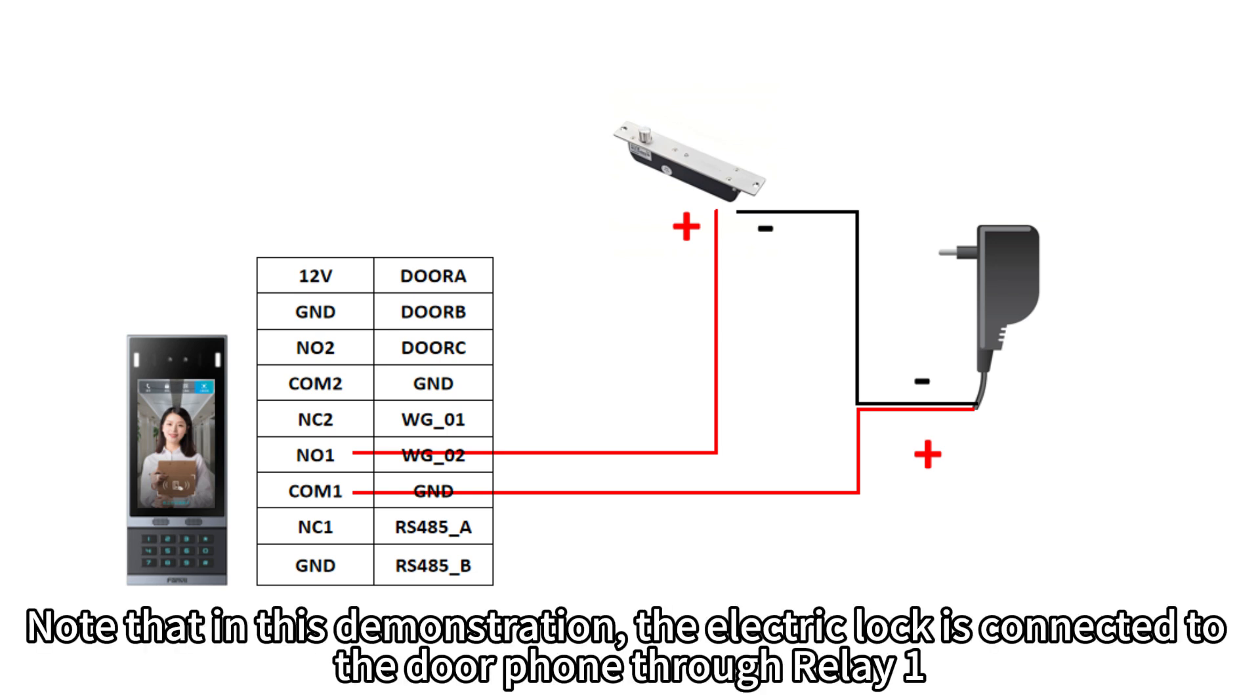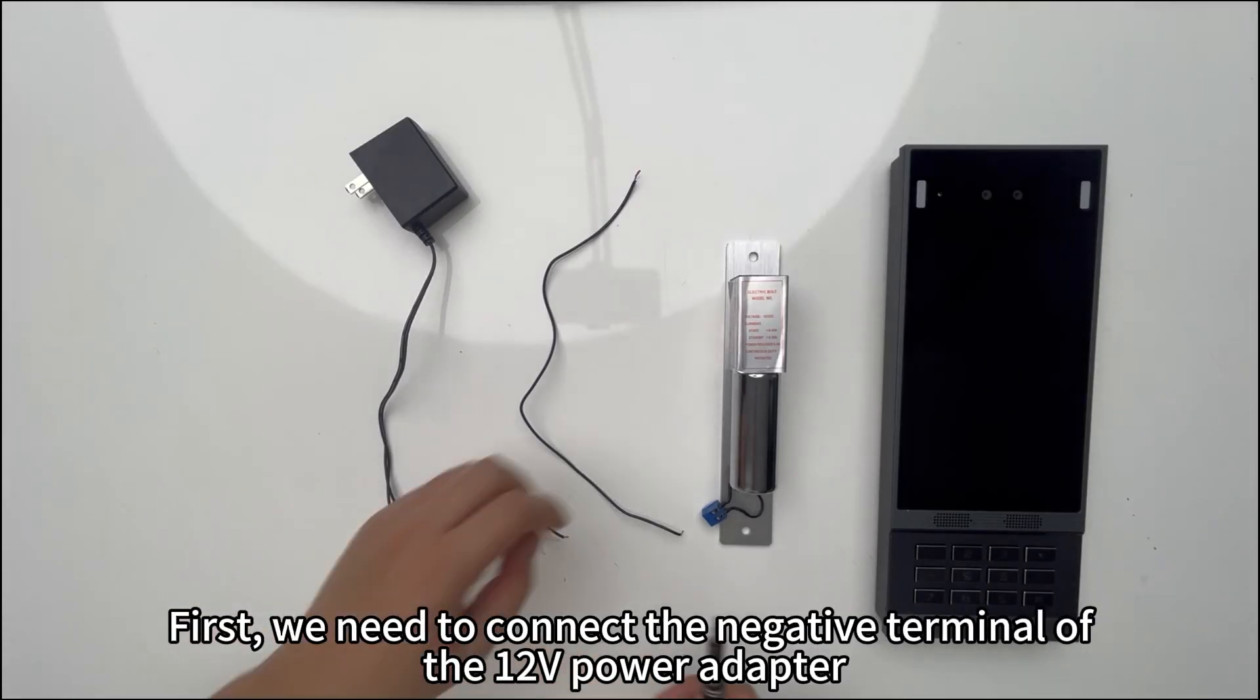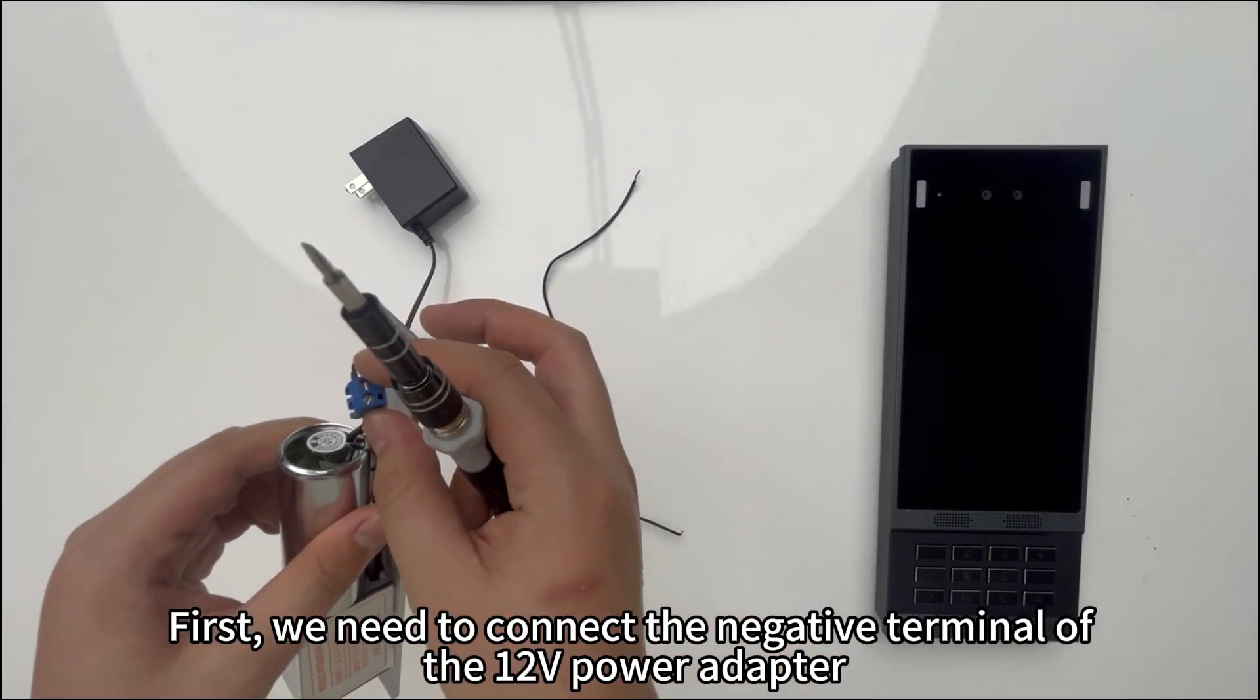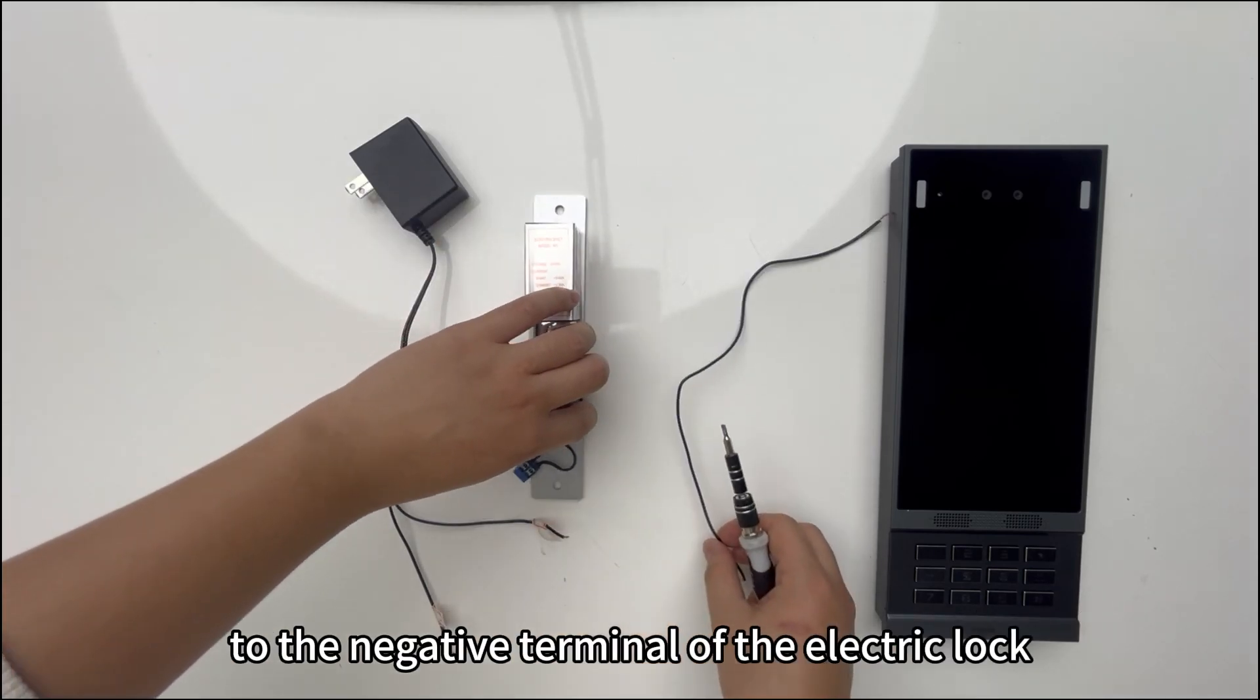First, we need to connect the negative terminal of the 12V power adapter to the negative terminal of the electric lock.